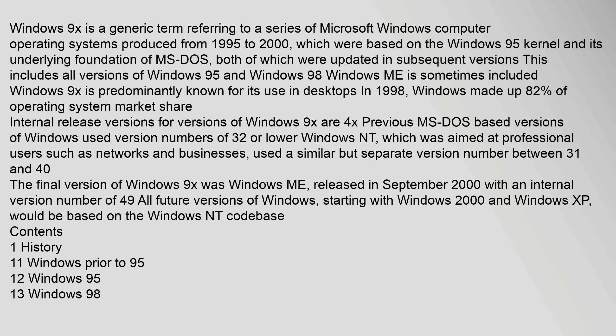Windows 9x is a generic term referring to a series of Microsoft Windows computer operating systems produced from 1995 to 2000, which were based on the Windows 95 kernel and its underlying foundation of MS-DOS, both of which were updated in subsequent versions. This includes all versions of Windows 95 and Windows 98. Windows ME is sometimes included. Windows 9x is predominantly known for its use in desktops. In 1998, Windows made up 82% of operating system market share. Internal release versions for versions of Windows 9x are 4x. Previous MS-DOS-based versions of Windows used version numbers of 3.2 or lower. Windows NT, which was aimed at professional users such as networks and businesses, used a similar but separate version number between 3.1 and 4.0.